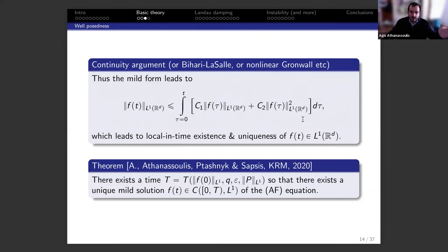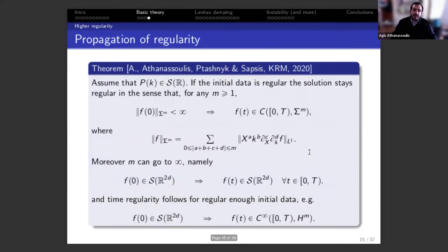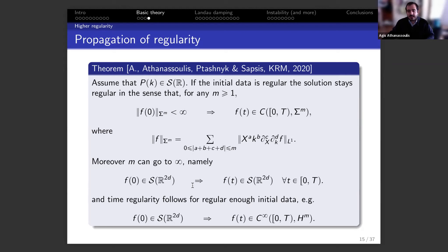This L¹-based approach, using Sobolev spaces with derivatives and moments in both variables, shows that regularity is preserved: if the spectrum is nice and you start with Schwartz-class regularity, you remain in Schwartz class. You also get many time derivatives. So smoothness is not destroyed until possible blow-up, and moments are not destroyed until possible blow-up. In principle you can compute this object up to a possible blow-up time.